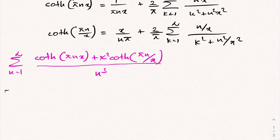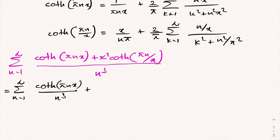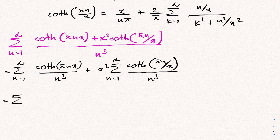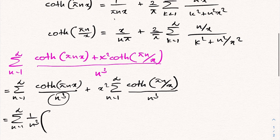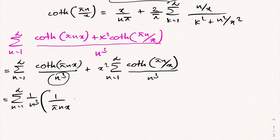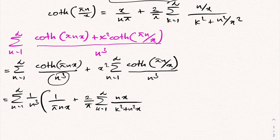We split this into two sums: sum from n equals 1 to infinity of coth(pi nx) over n cubed, plus x squared times sum from n equals 1 to infinity of coth(pi n over x) over n cubed. Now we plug in our expressions. For the first sum: 1 over n cubed times 1 over pi nx, plus 2 over pi times sum from k equals 1 to infinity of nx over k squared plus n squared x squared.